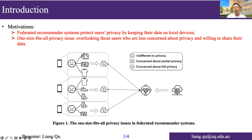However, the currently existing architecture of the federated recommendation system assumes that all users have the same privacy budget, meaning that they don't upload any data to the server, which is sub-optimal, because it overlooks those users who are less concerned about privacy and willing to share all or a portion of their data to receive a better recommendation service.